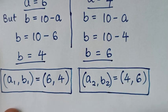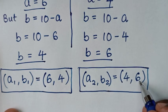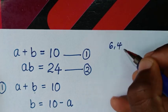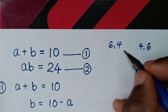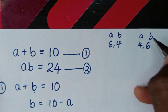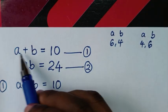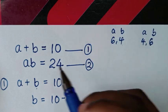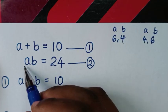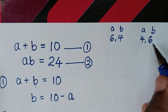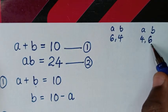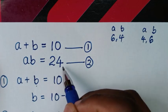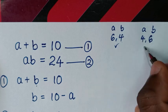So we have 6 comma 4 and 4 comma 6. Now let's check from our problem. For the first solution, 6 plus 4 is 10 and 6 times 4 is 24. For the second solution, 4 plus 6 is 10 and 4 times 6 is 24. So these two solutions are correct.